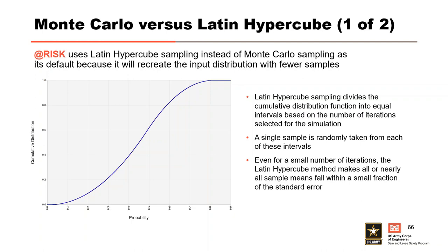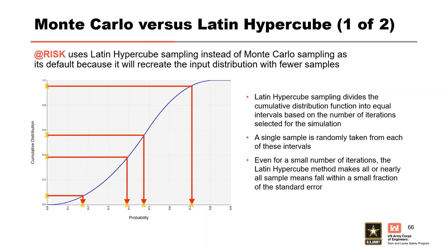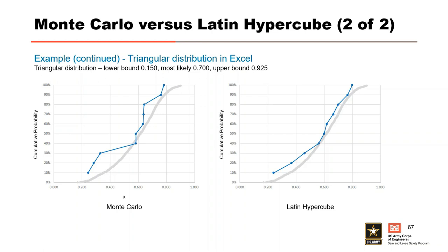Another sampling method is Latin Hypercube, which is the default method used by AtRisk. This method recreates the input distribution with fewer samples than Monte Carlo sampling by dividing the CDF into equal intervals based on the number of iterations selected, then randomly selecting a single sample from each interval. Even for a small number of iterations, the Latin Hypercube method makes nearly all sample means fall within a small fraction of the standard error. Comparing 10-iteration results, Latin Hypercube sampling does a much better job of matching the expected distribution than Monte Carlo with the same limited number of iterations.